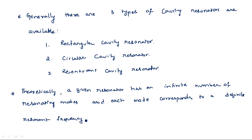Theoretically, a given resonator has an infinite number of resonating modes, and each mode corresponds to a definite resonant frequency. Just as a wave traveling in a rectangular or circular waveguide has modes like TE, TM with indices 00, 01, 10, 11, a wave inside a cavity resonator also has infinite modes, each with a specific resonant frequency.